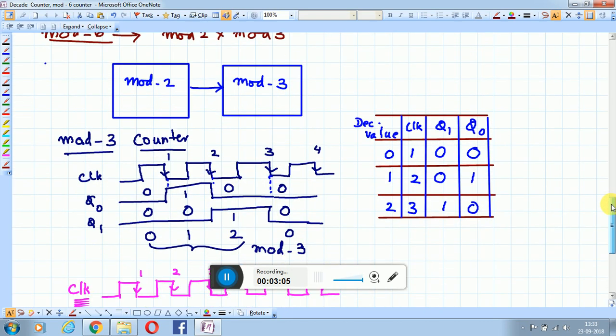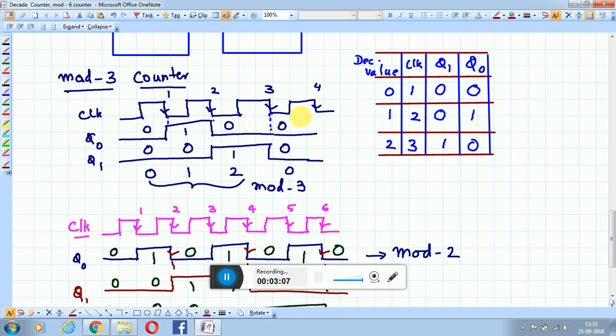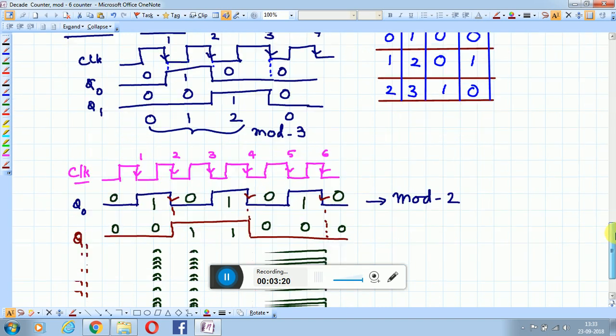Similarly, we have already seen a mod-3 counter. When you provide clock pulses, it counts from 0, 1, 2. Three clock pulses are required, then it resets and the counting sequence continues. To this, suppose you add mod-2.